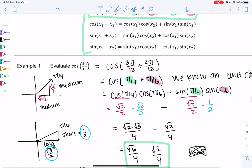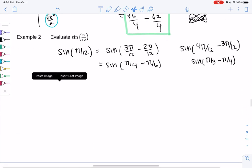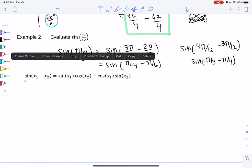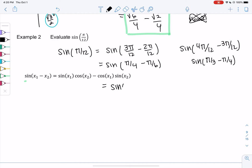So let's use the subtraction identity. So we're not memorizing these identities, we're just using them. And then we'll go ahead and simplify. So we get sine of pi over 4, and then cosine of pi over 6, minus cosine of pi over 4, and sine of pi over 6.